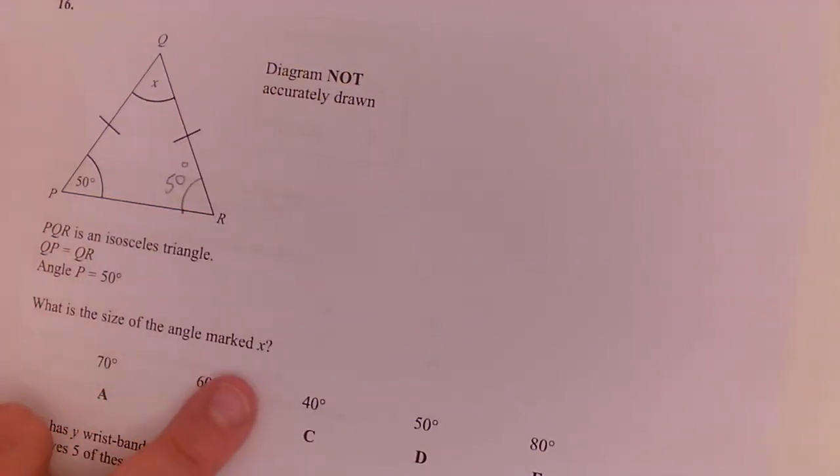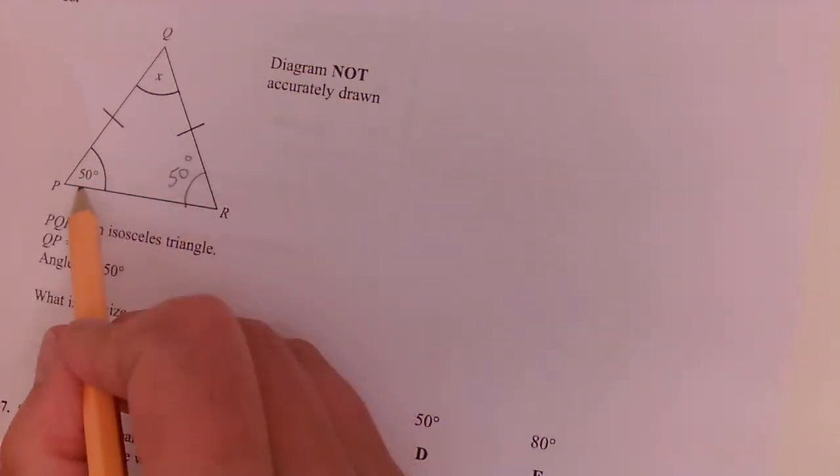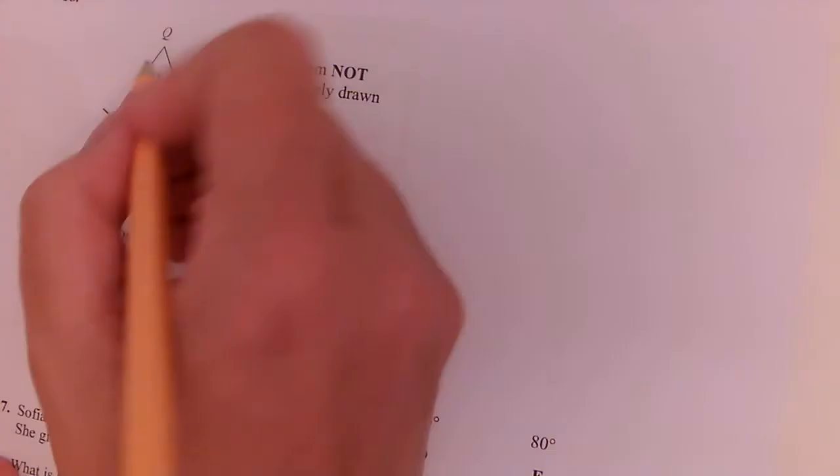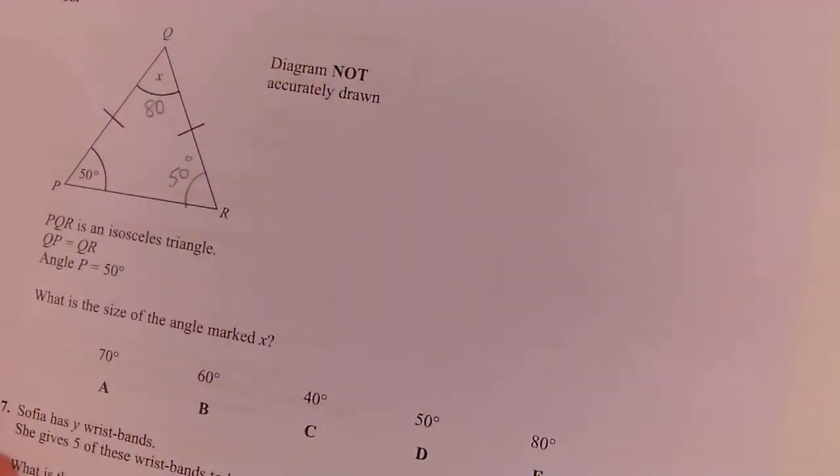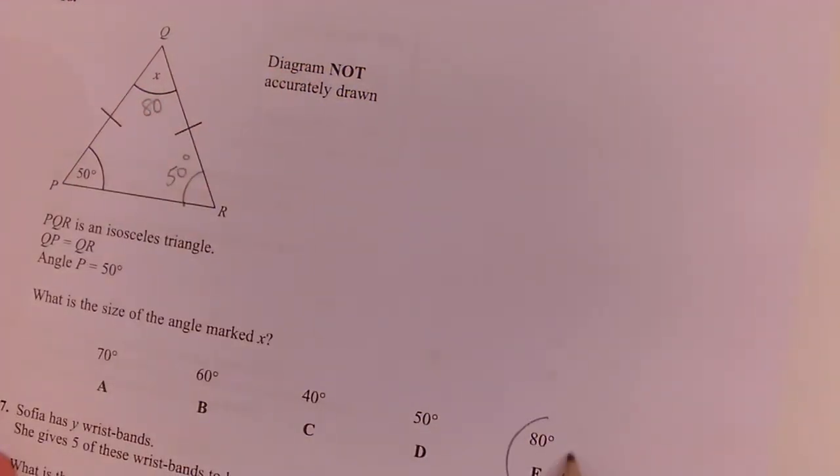Work out the angle X. Well, the angles in the triangle add up to 180. So those two add to 100. So this one must be 80. So angle X is 80 degrees.